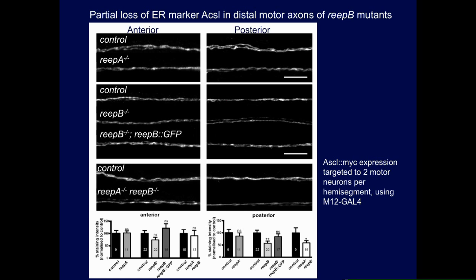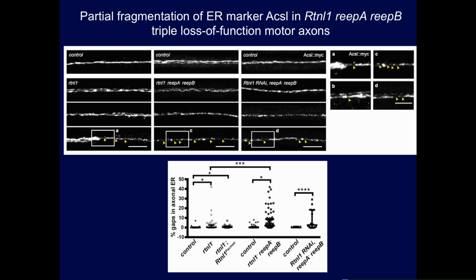We then made the triple mutant — reticulon, Reap A, and Reap B — equivalent to the yeast genotype missing both families, analogous to a tenfold mouse knockout. The phenotype is quite variable, but at the most extreme end we see what looks like fragmentation of axonal ER judged by the ACSL marker. We know it's not fragmentation of axons themselves because a plasma membrane marker is not affected in this way. Using reticulon knockdown, we see a similar effect as with the mutant.